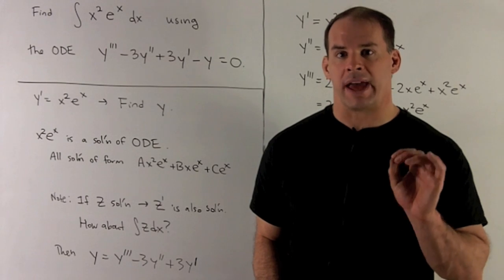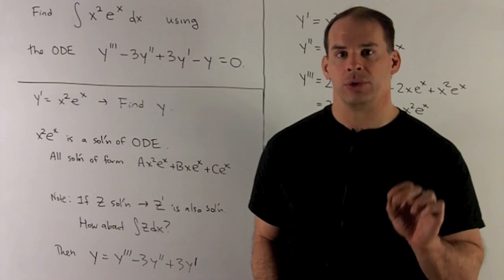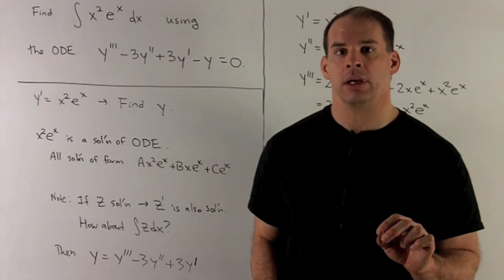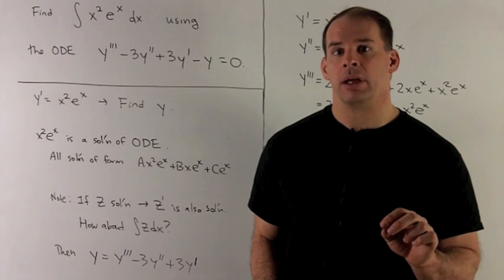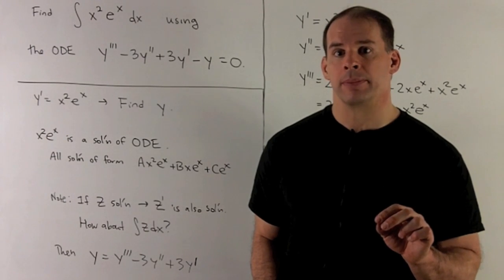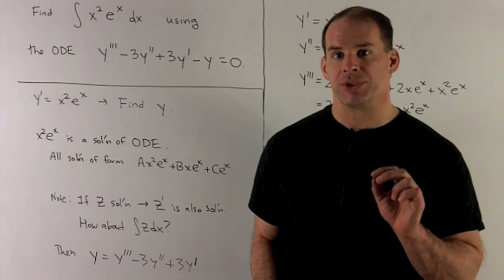Find the antiderivative of x squared e to the x using the following ODE: y triple prime minus three y double prime plus three y prime minus y equals zero.